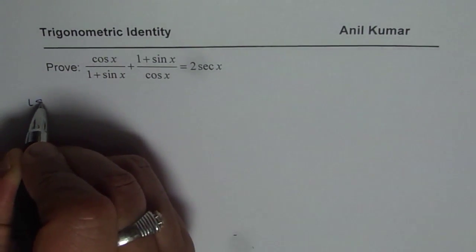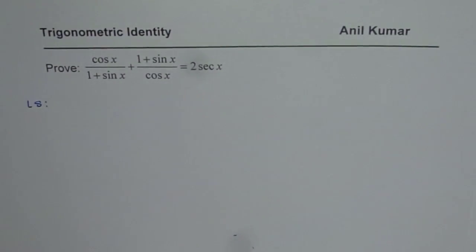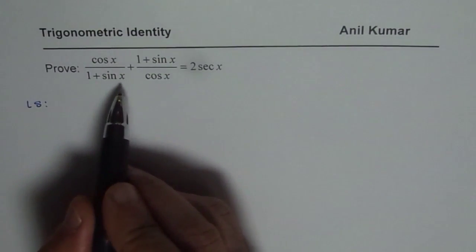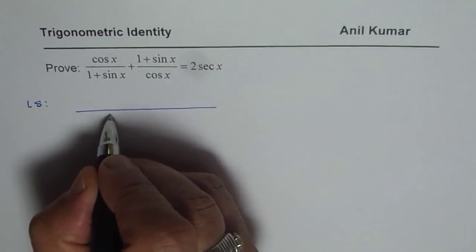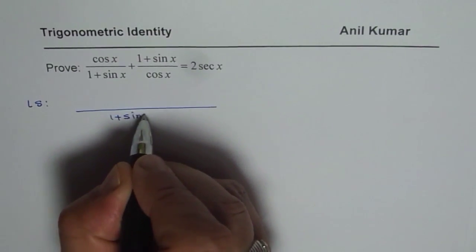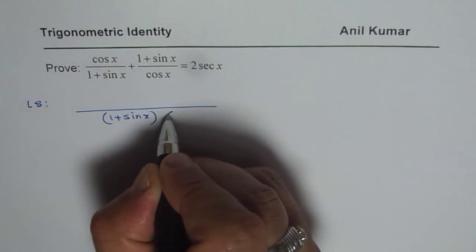Let's begin with the left side since it is more complicated and can be easily simplified. We will take the common denominator of 1 plus sin x times cosine x.